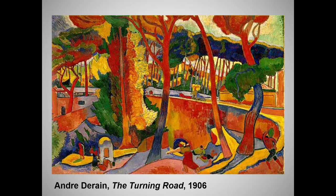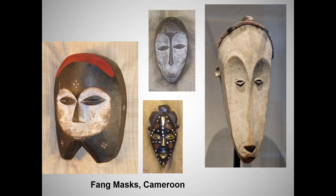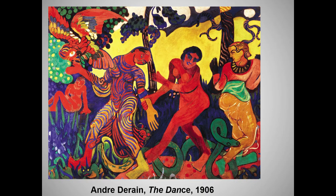André Derain was a co-founding Fauve artist who didn't make the cut for the required list, but you might be asked to attribute a painting to the Fauves based on its highly saturated, expressive colors and joyful spirit. Derain was also important to the history of art because he collected African art and introduced his collection of Fang masks to Matisse and, even more significantly, to Picasso. The Dance reveals the influence of Derain's African art collection, and the wildly vibrant colors are again typical of the Fauves.